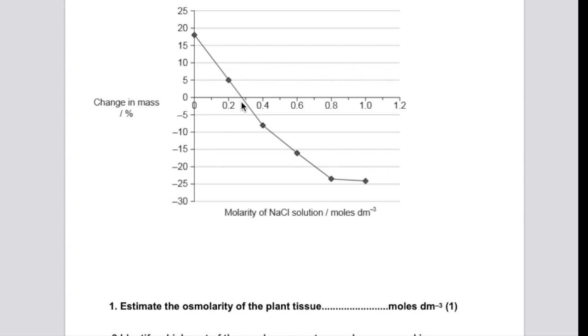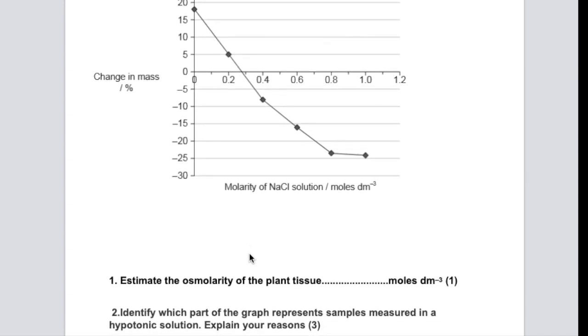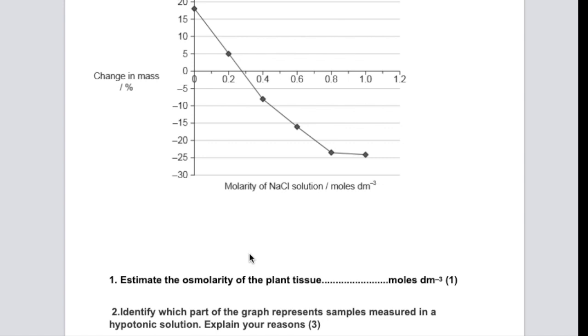You can't afford to vary too much from the true answer as the tolerance in these graphical type questions tends to be very strict. So, that's the osmolarity. The second question that you're going to answer for this is identify which part of the graph represents samples measured in hypotonic solution and explain your reasons.